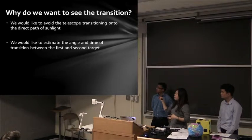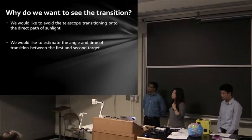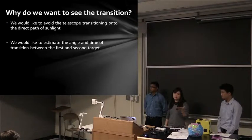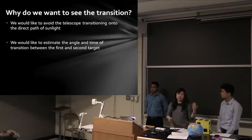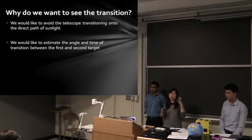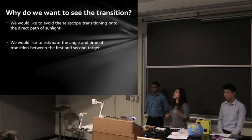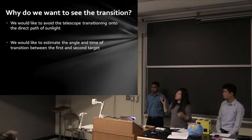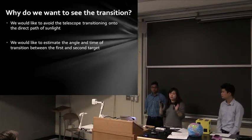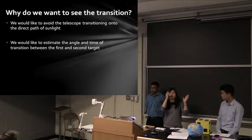So why do we care about the transition? First, we want to avoid sunlight on the telescope because it can cause sun damage to the image sensor or pixels. We also want to estimate the angle and how long it will take to transit from the first target to the second target.